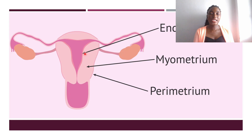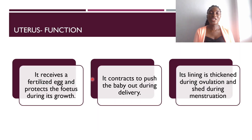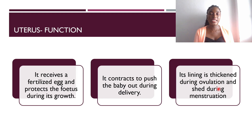The three layers of the uterine lining are the endometrium, the myometrium, and the perimetrium. The functions of the uterus include: receiving a fertilized egg and protecting the fetus during its growth; contracting to push the baby out during delivery; and thickening its lining during ovulation and shedding it during menstruation.